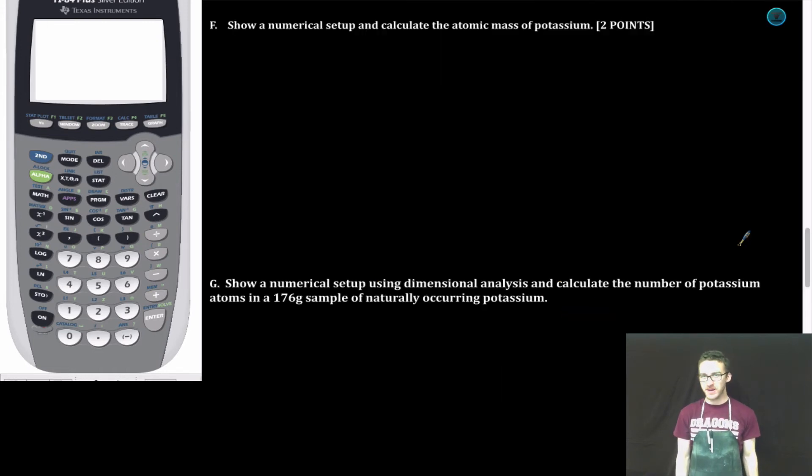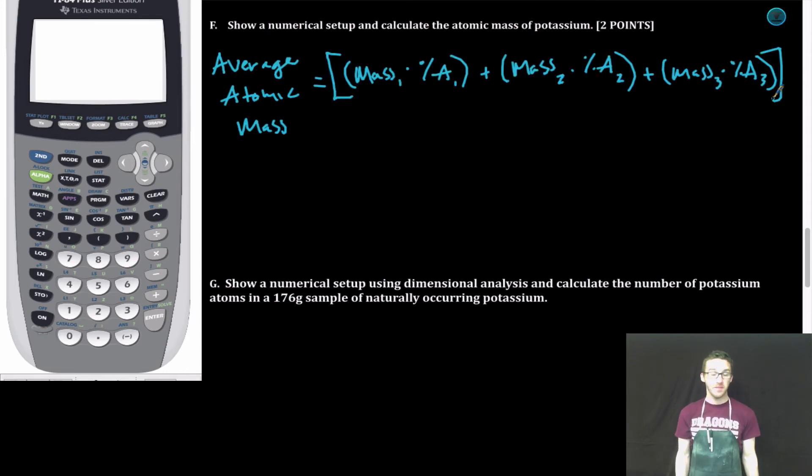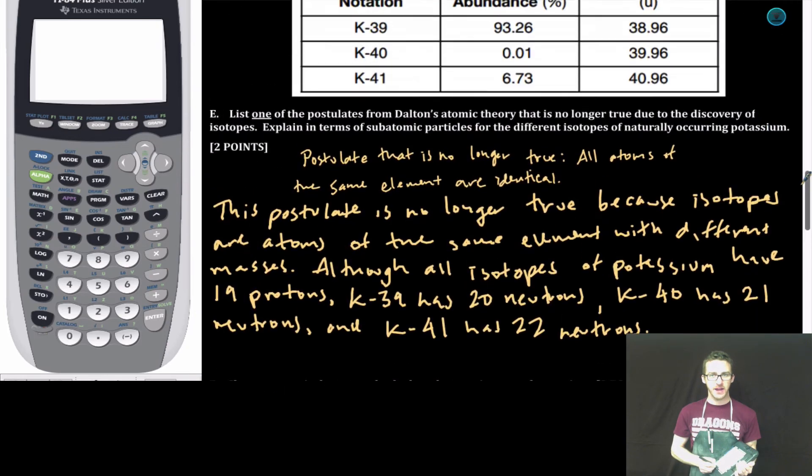Part F. Show a numerical setup and calculate the atomic mass of potassium. Recall the formula for average atomic mass. We're taking the mass of the individual isotopes multiplying by their percent abundances and adding them all together. Because we have three naturally occurring isotopes, we have to do that three times.